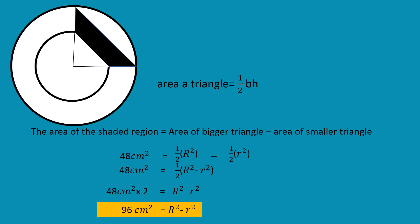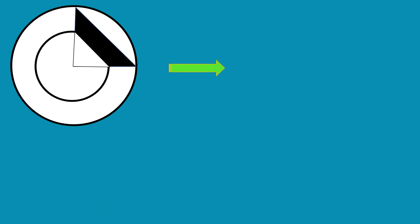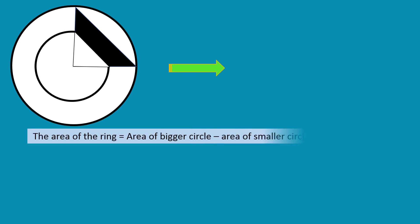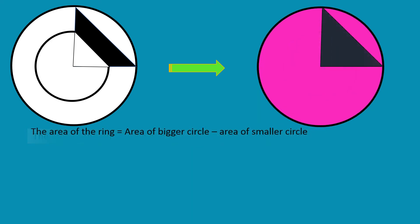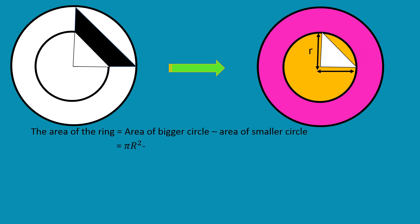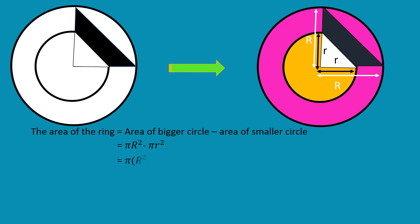Now let us find the area of the ring by subtracting the area of the smaller circle from the area of the bigger circle. The area of the bigger circle is pi times R squared, and the area of the smaller circle is pi times r squared. Simplifying: pi times the quantity R squared minus r squared. We already have the value of R squared minus r squared, which is 96 square centimeters. So the area of the ring is 96π square centimeters.